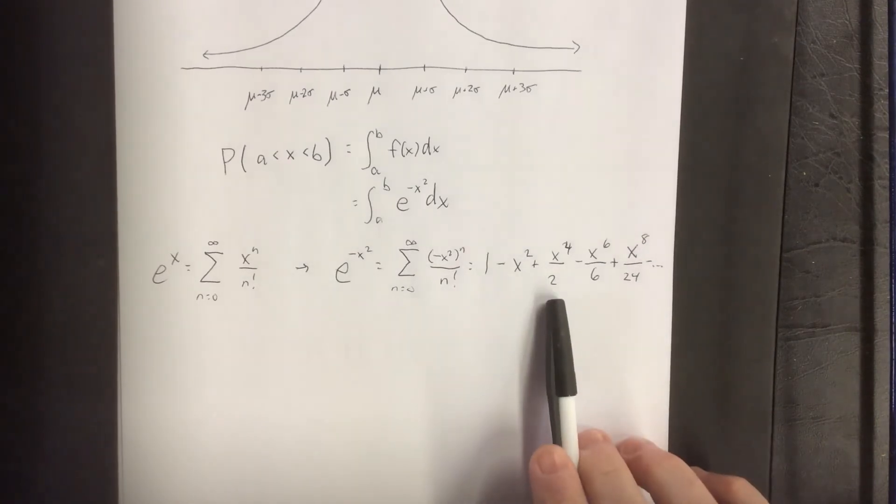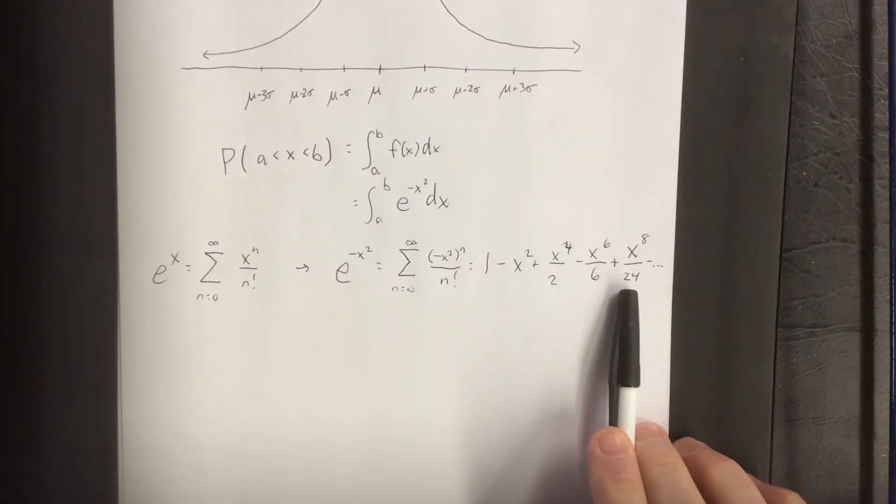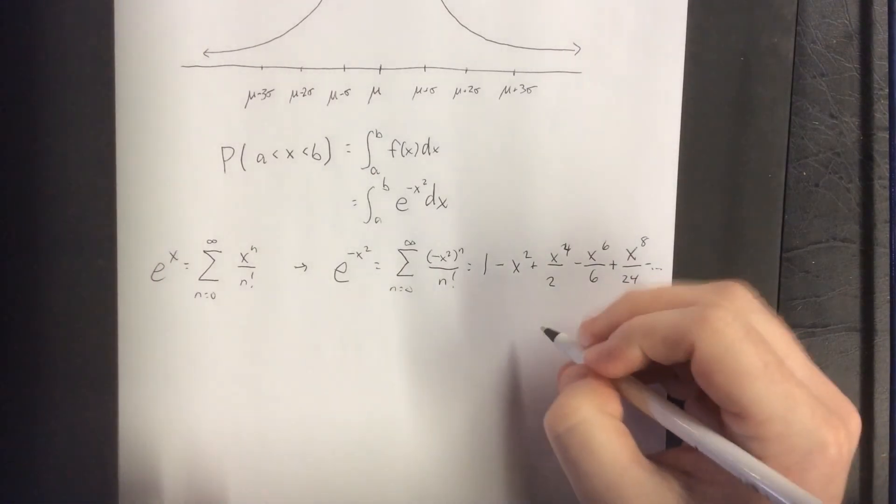In order to get this accurate to four decimal places, we need to get far enough out to where the denominators are bigger than 10,000. The good news is that starts happening around 7 factorial.